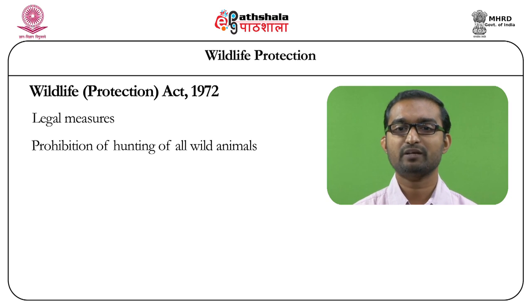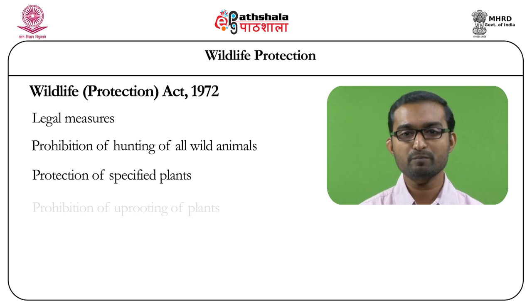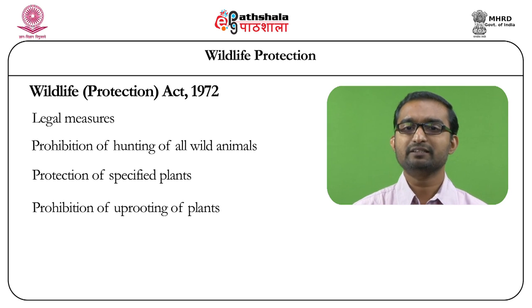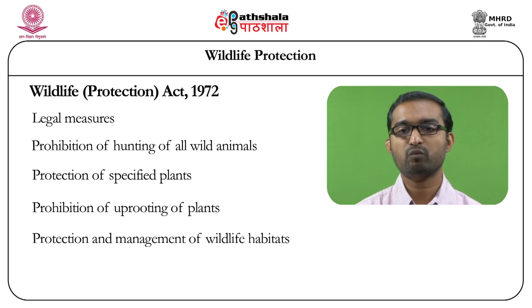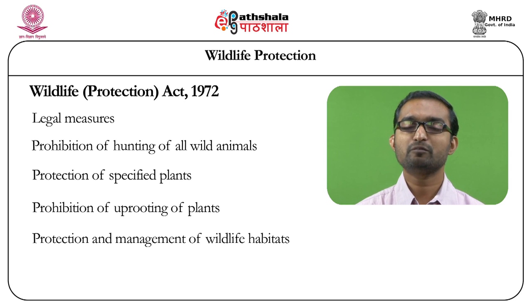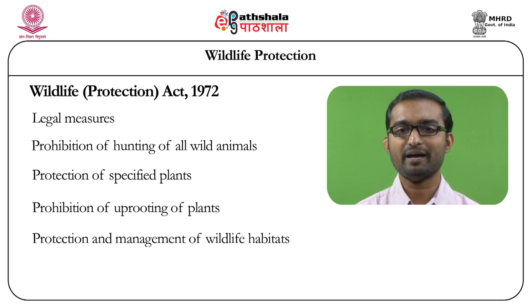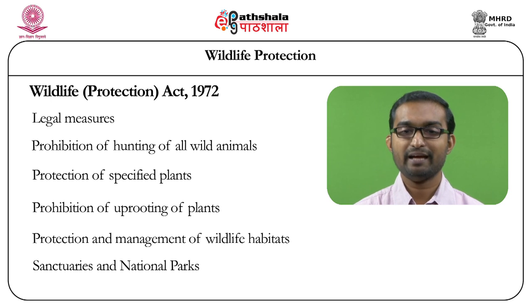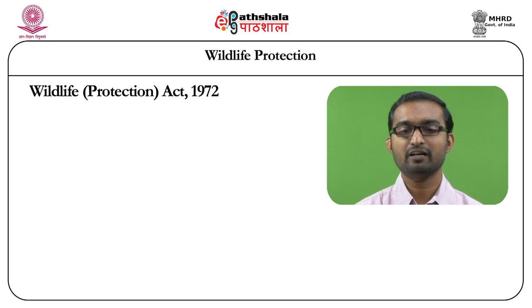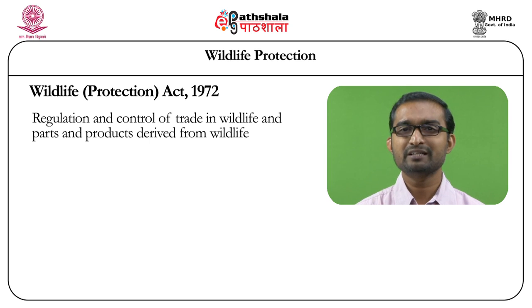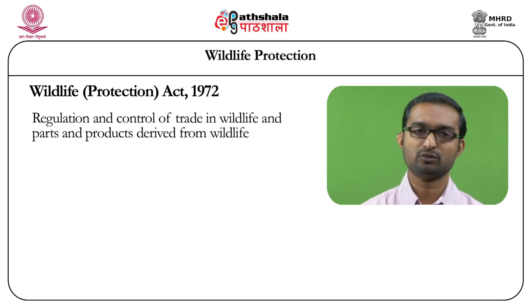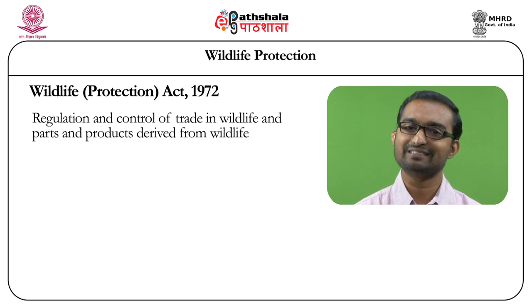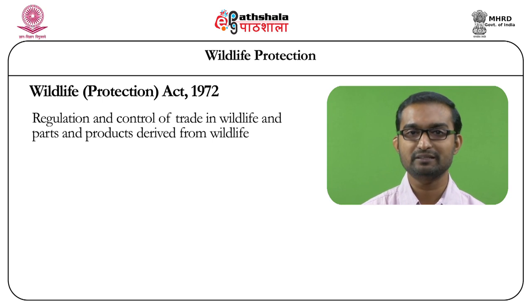The third major substantive measure is protection and management of wildlife habitats, since habitat destruction was one of the major threats for wildlife population in India. The Wildlife Protection Act 1972 introduced protection and management of natural habitats, mainly in the form of sanctuaries and national parks. The fourth major legal measure is regulation and control of trade in wildlife and their parts and products, as the lucrative market for wildlife trophies is one of the major reasons wildlife population is affected.